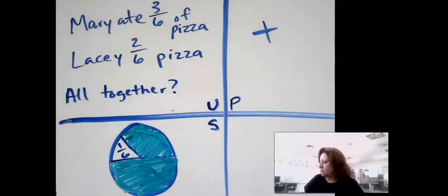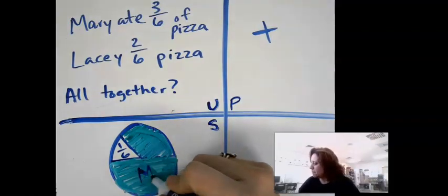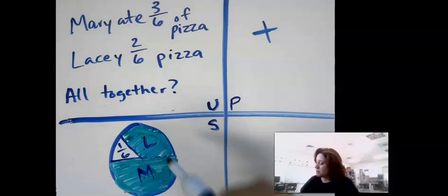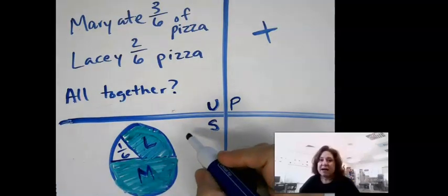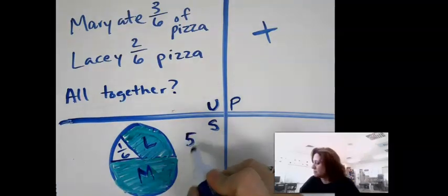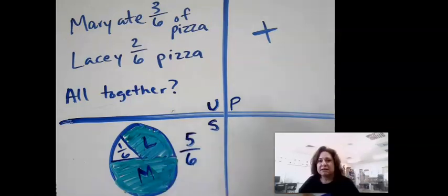So we have Mary and Lacey. So they ate five pieces out of the six. So they ate five-sixths of the pizza.